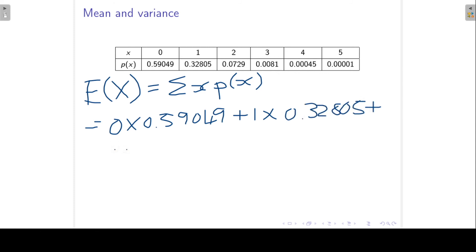We can continue in this way, till x equal to 5. And you will find an answer of 0.5. We can in the same way also find the variance of x. Now this is a very tedious way, and if we know that we are working with the binomial distribution, there is a shortcut.